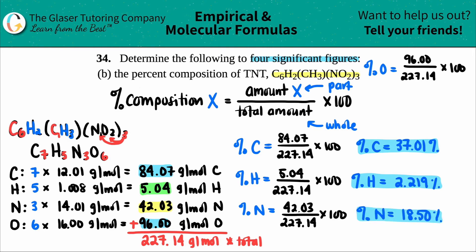Okay. And then oxygen, seems like that's the big boy. 96 divided by 227.14, times 100. I get 42.26. Oh, percent oxygen equals 42.26%. And those are all of your percent composition of each individual element of TNT.